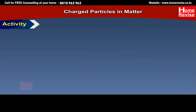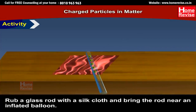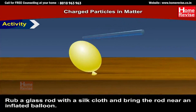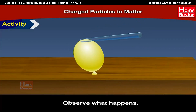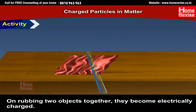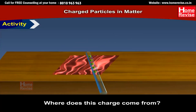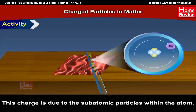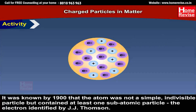Activity: Rub a glass rod with a silk cloth and bring the rod near an inflated balloon. Observe what happens. On rubbing two objects together, they become electrically charged. Where does this charge come from? This charge is due to the subatomic particles within the atom. It was known by 1900 that the atom was not a simple, indivisible particle, but contained at least one subatomic particle — the electron.